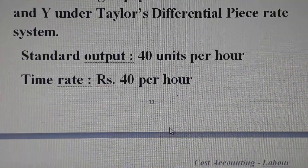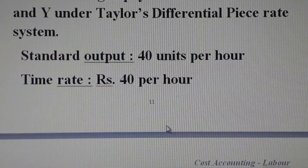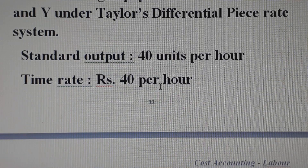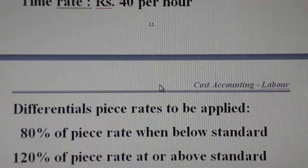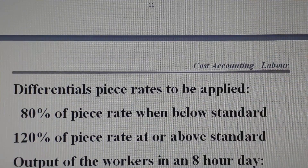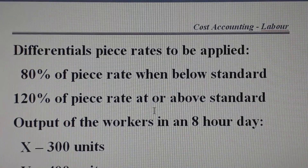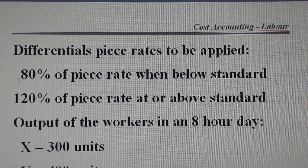The standard output is 40 units per hour. The time rate is Rs. 40 per hour. Below standard workers are paid 80% of the piece rate, and above standard workers are paid 120% of the piece rate. That is how Taylor's Differential Piece Rate system works.